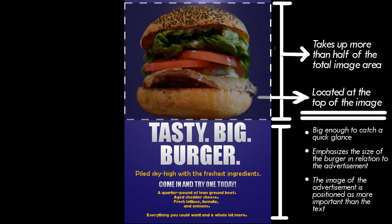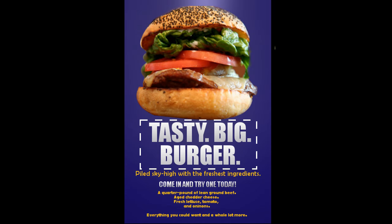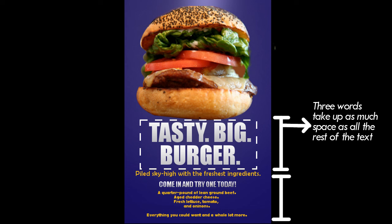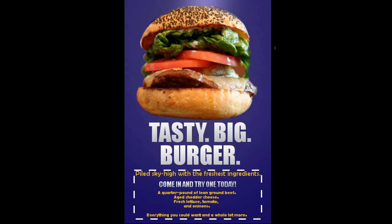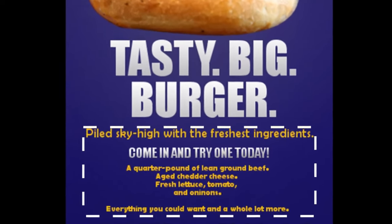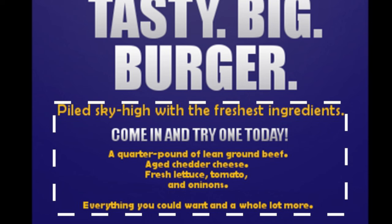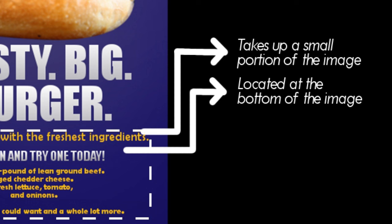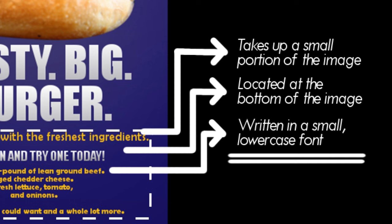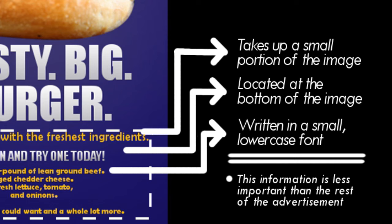We might now move on to the second largest part of the image, which is the three words below the burger. These words also take up a large portion of the image and are written in all capital letters. Both of these characteristics reinforce what's going on in the image above — the idea that this is a very large burger. Moving on, we can see that the majority of the text is located at the bottom of the image. Here, the advertisement tells us about what kinds of ingredients are in the sandwich and the quality of those ingredients. Because this information is located at the bottom of the image and in a much smaller font, it is clear that this information is less important to the audience than the overall size of the burger.